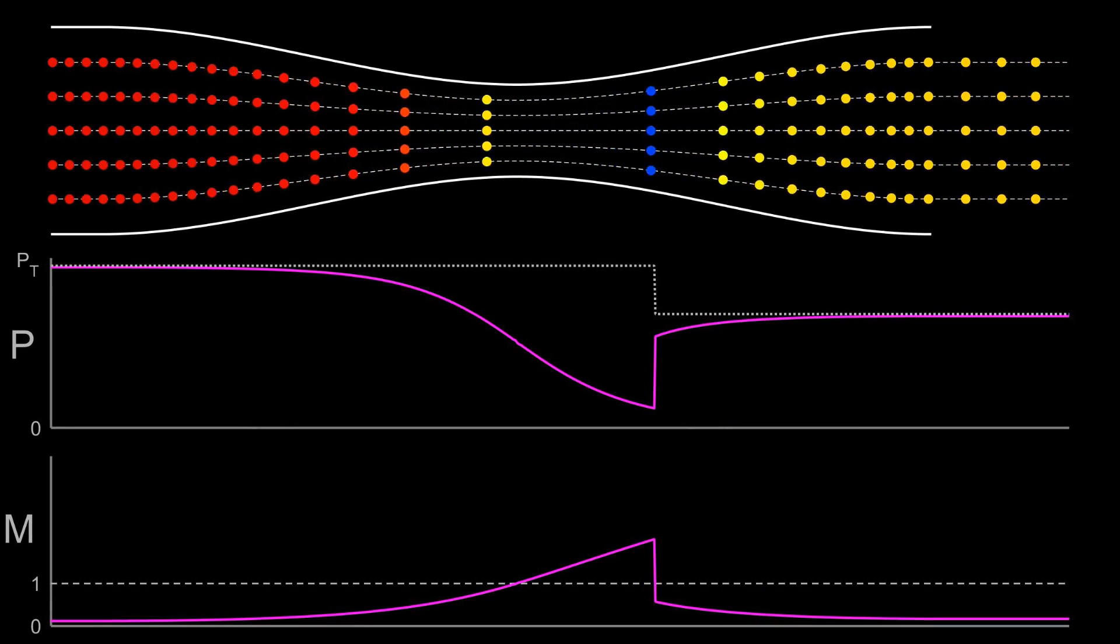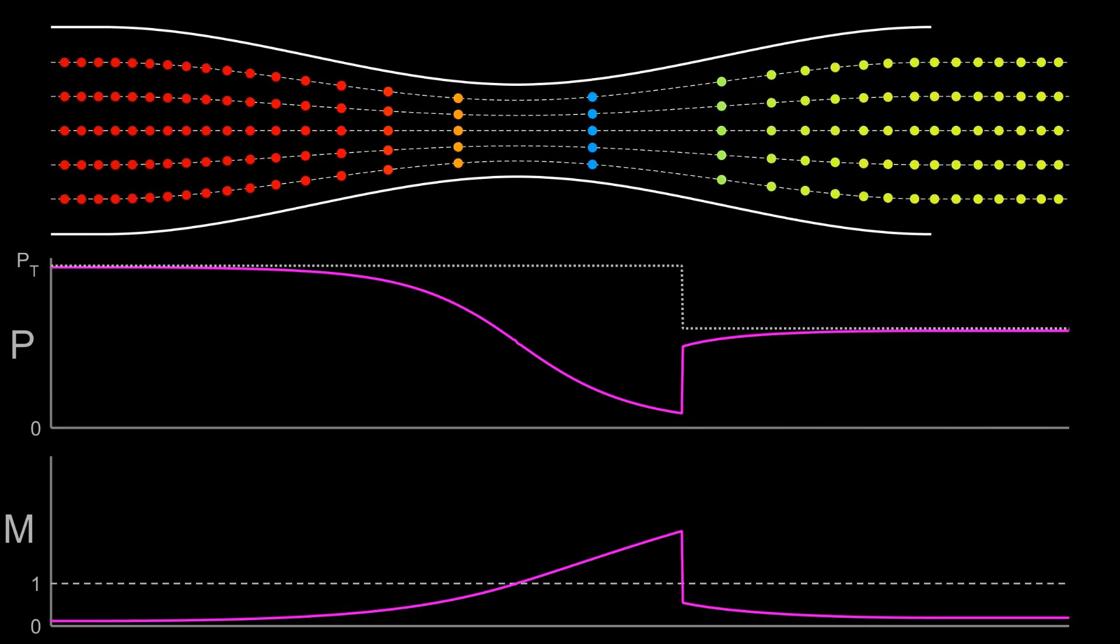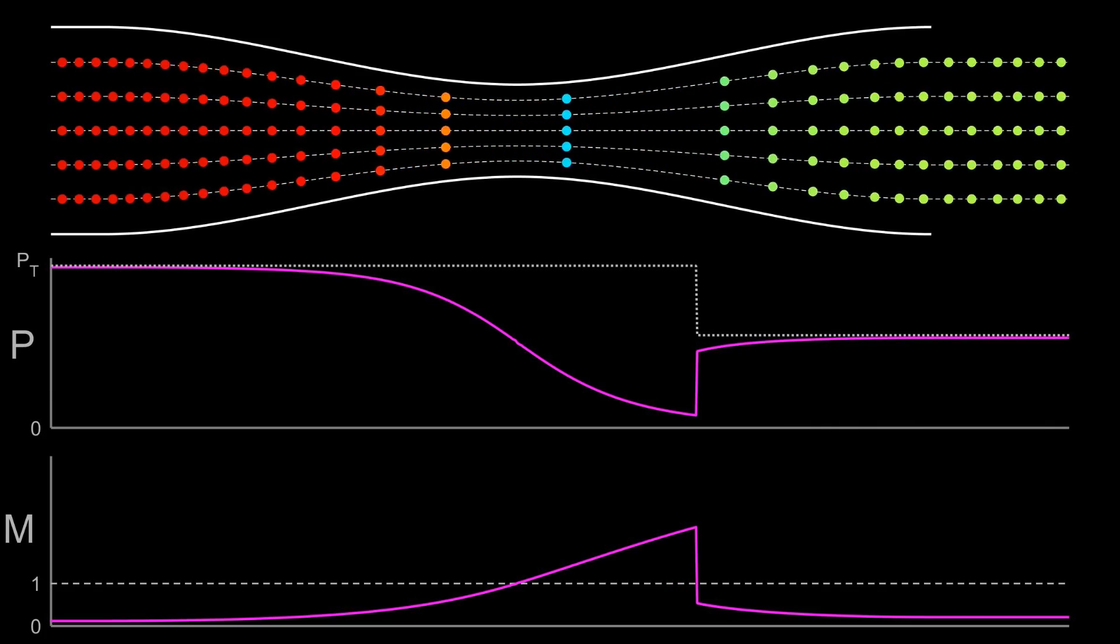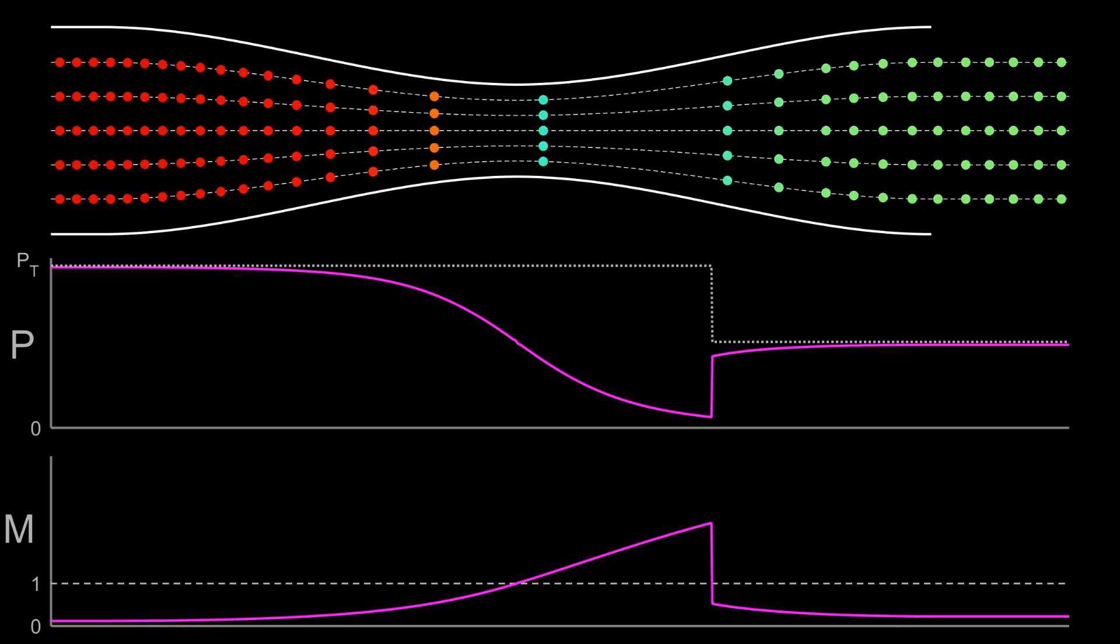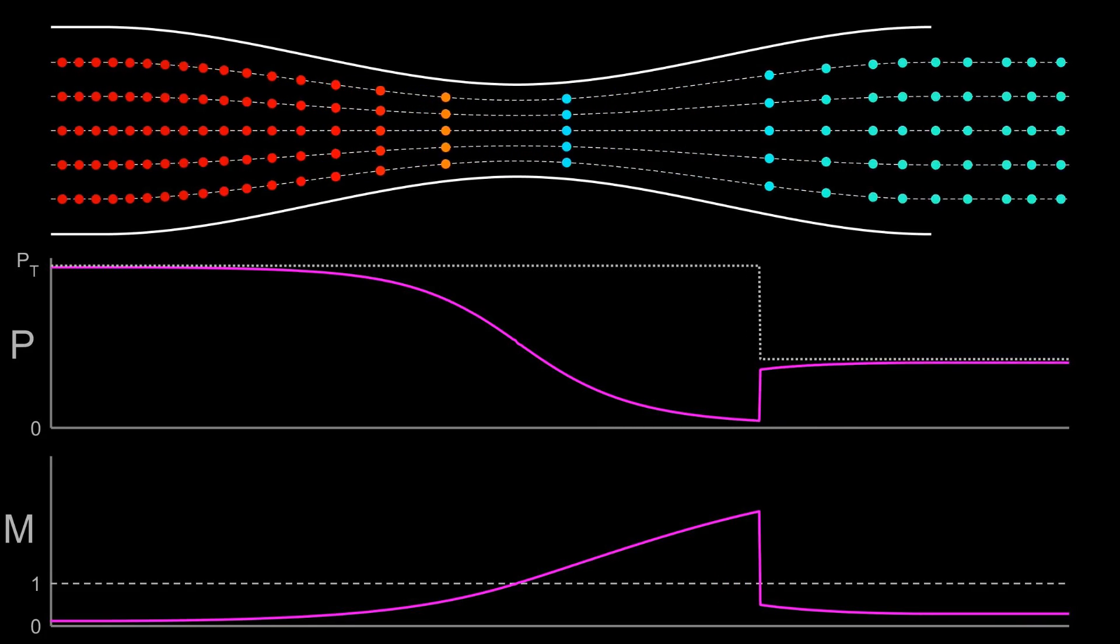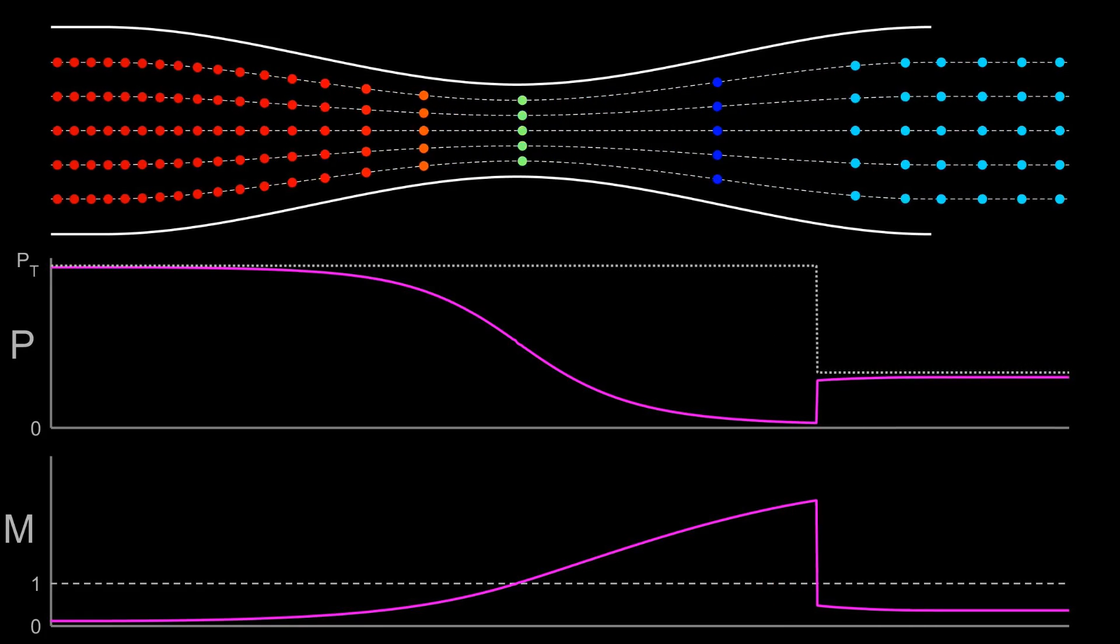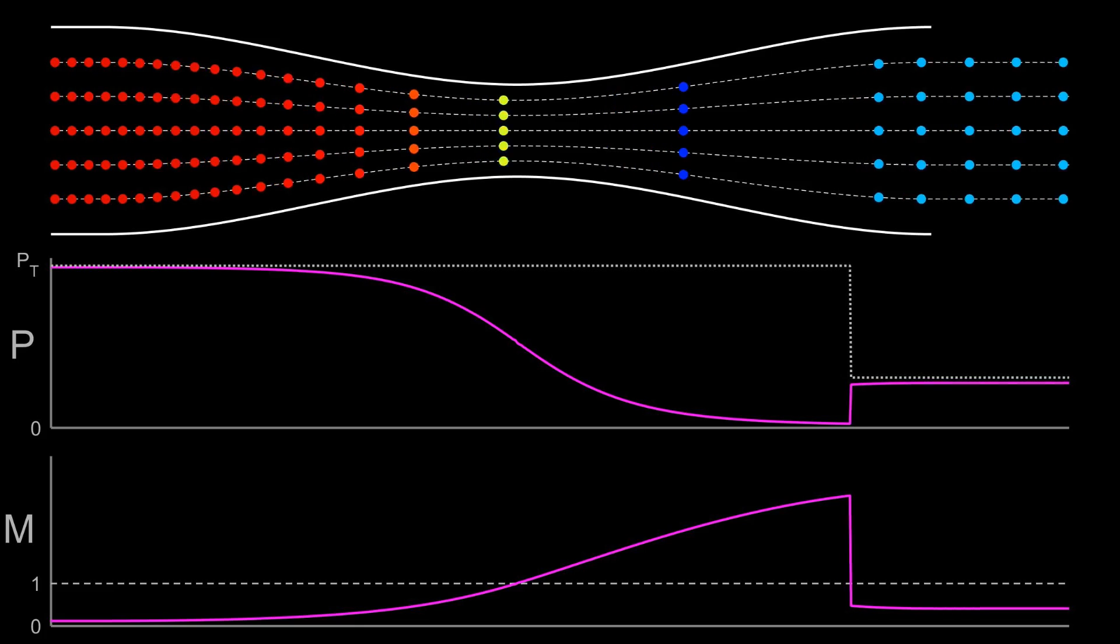As the exit pressure is reduced, this lower pressure information can propagate up the subsonic flow section until it reaches the shock. With a lower downstream pressure, the pressure differential across the shock has been decreased, making it a weaker and slower shock, and so it will move down the nozzle until it finds a new equilibrium point.